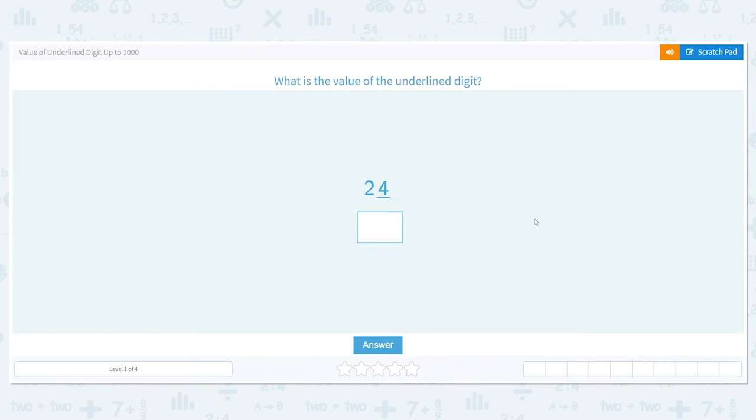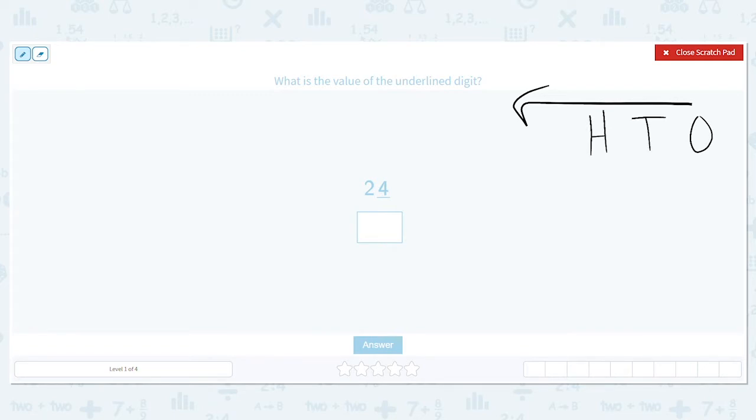Hello, we are going to practice finding the value of an underlined digit up to 1,000. Remember our place values go from right to left: ones, tens, hundreds, thousands, and so on.